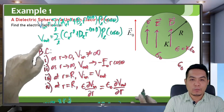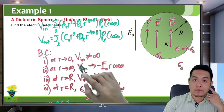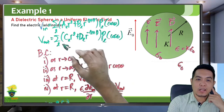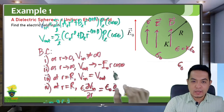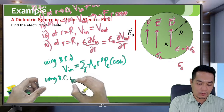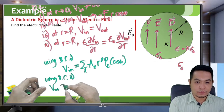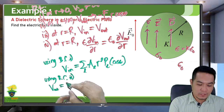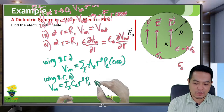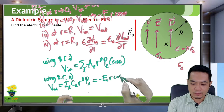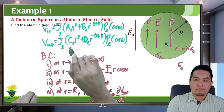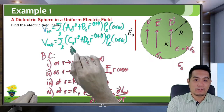Now apply boundary condition 2 on the potential outside. As R approaches infinity, the R to the negative L+1 term approaches 0, leaving C_L times R to the L times P_L of cosθ, which must equal negative E₀ R cosθ. Using boundary condition 2 — performing a Fourier-like expansion by multiplying both sides by P_{L′} and integrating over d(cosθ) — only L equal to 1 survives, giving C₁ equal to negative E₀.